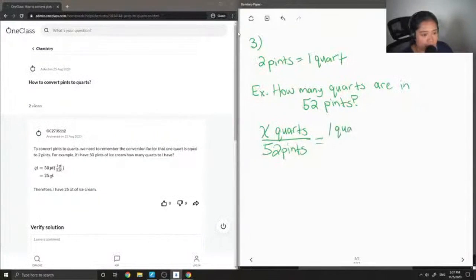And then I'm going to write my conversion factor on the right side: one quart over two pints. And now I'll just solve for x, multiplying both sides by 52. Our unit should cancel out.